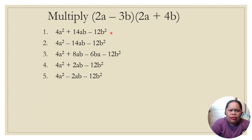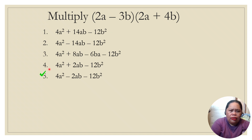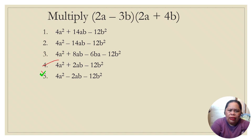Next, multiply (2a + 3b) times (2a + 4b). We get: 2a times 2a is 4a squared, 2a times 4b is 8ab, 3b times 2a is 6ab, and 3b times 4b is 12b squared. Combining like terms: 8ab minus 6ab is 2ab — so the correct final answer is 4a squared + 2ab + 12b squared.